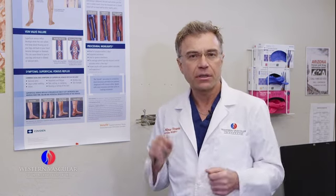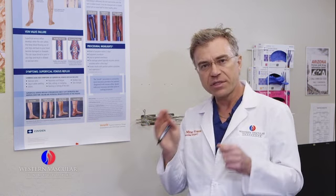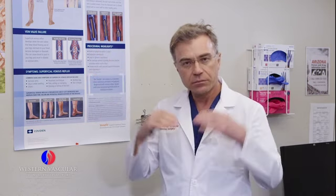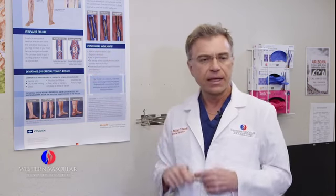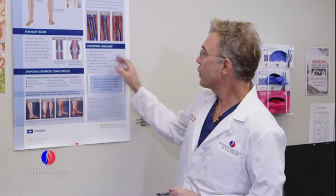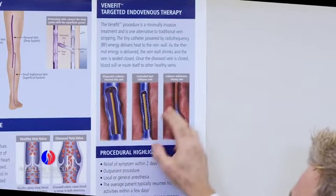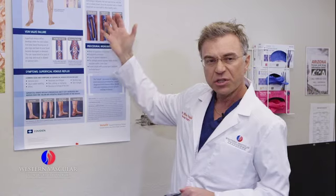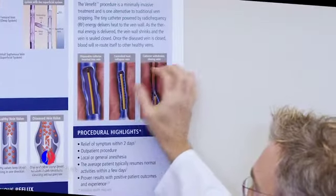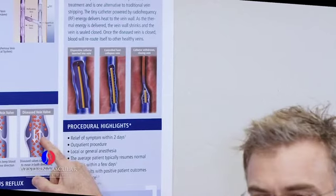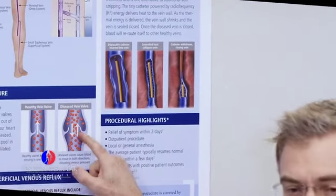Other treatments include laser insertion into the vein, where a heat source closes the vein and prevents the valves from being stretched and the veins from dilating. Another therapy — the one we're going to do today — is radiofrequency ablation, where we pass a catheter into the dilated vein. There's a heat source element at the tip of the catheter reaching almost 300 degrees Fahrenheit, which contracts and burns the vein into a little fibrotic core, getting rid of the dilated vein and the incompetent valve problem.